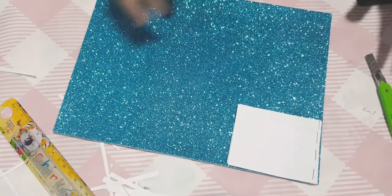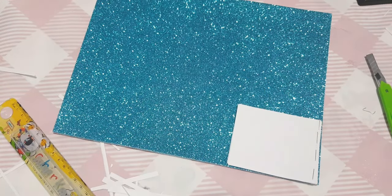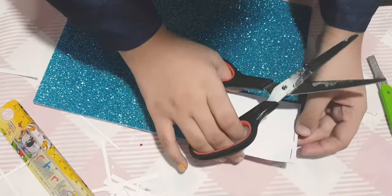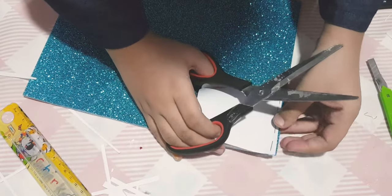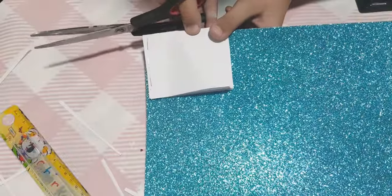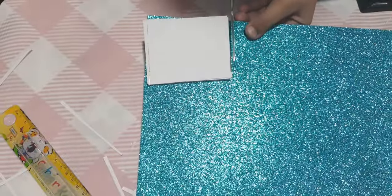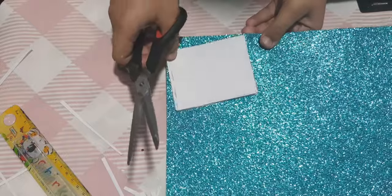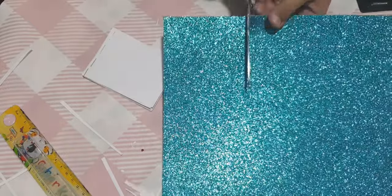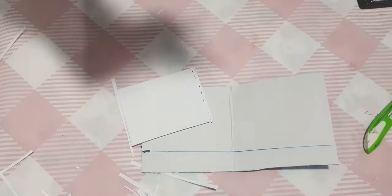Now we will need the scissors to cut the glitter sheet as much as we need. I'm gonna show you properly so you don't have any confusion. We're gonna cut from here—you can see the size of your diary and then cut it straight.